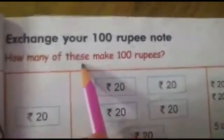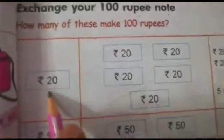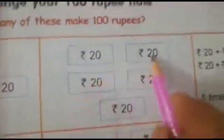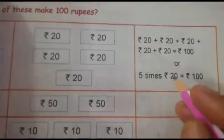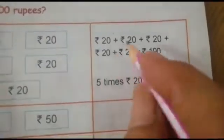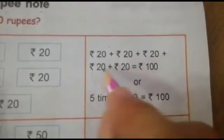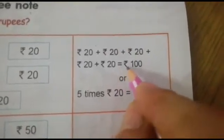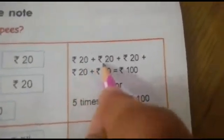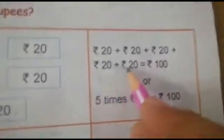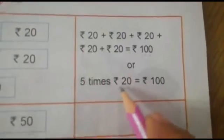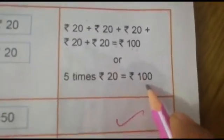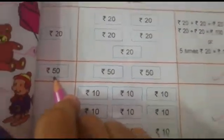How many of these make hundred rupees? Now, which note is this? Rupees 20. And how many notes are there? 1, 2, 3, 4, 5. It means how many times we have to add rupees 20 to make rupees 100 — 5 times. Rupees 20 plus 20 plus 20 plus 20 plus 20 is equal to rupees 100, or we can write: 5 times rupees 20 is equal to rupees 100.